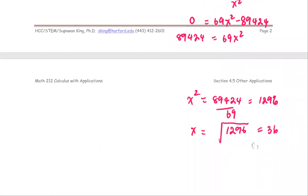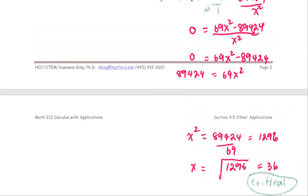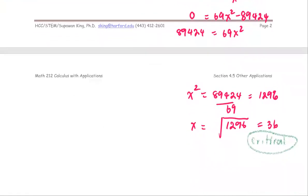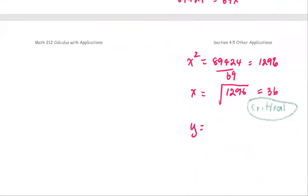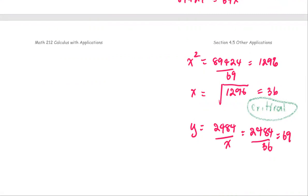Using the critical number x = 36 to find y: y = 2484/x = 2484/36 = 69. So the pair of dimensions is x = 36 feet and y = 69 feet.